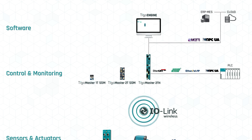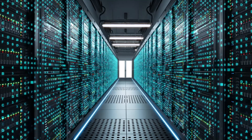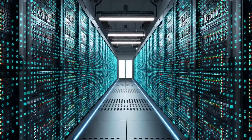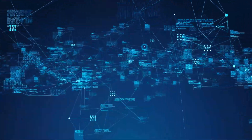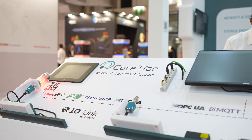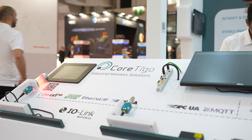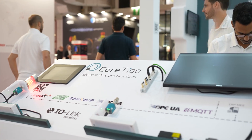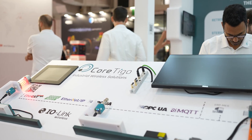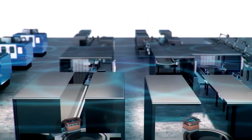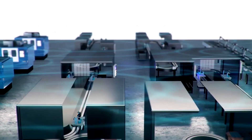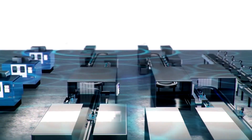In addition, the TIGO Master can connect over MQTT and OPC UA to enterprise applications, to industrial IoT servers, and to the cloud. A single TIGO Master can connect wirelessly to multiple IO-Link wireless devices, and several TIGO Masters can be daisy-chained to support hundreds of devices in a single work cell.